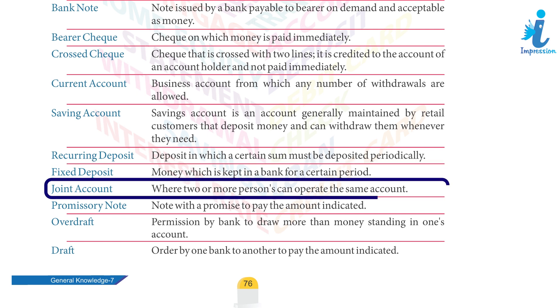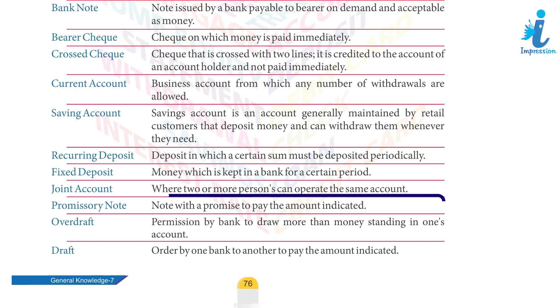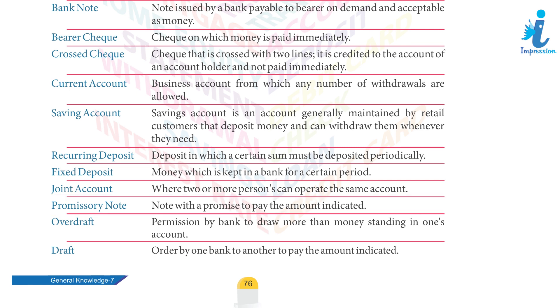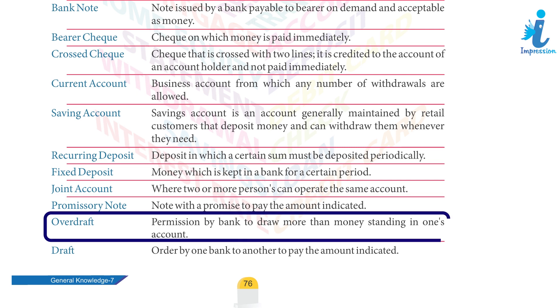Joint Account — an account where two or more persons can operate the same account. Promissory Note — a note with a promise to pay the amount indicated. Overdraft — permission by a bank to draw more money than is standing in one's account.